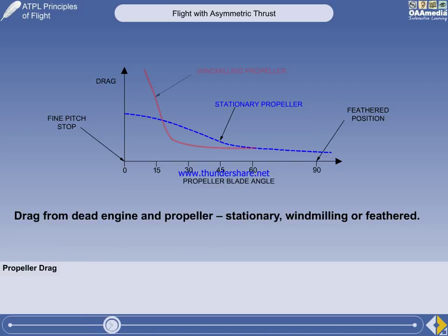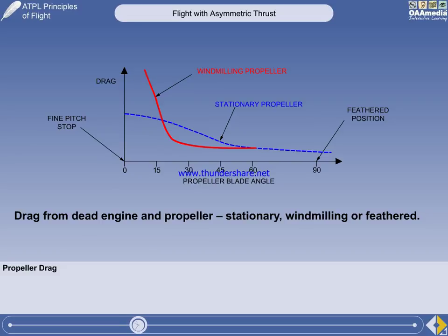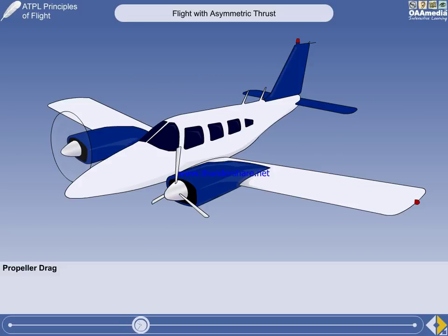A windmilling propeller will produce a large amount of drag, being driven by the relative airflow, generating both drag and torque. The propeller will also have the load of turning the dead engine, unless an automatic decoupling device is fitted. A feathered propeller will cause the least possible drag. There is no torque, since it is not rotating, and the parasite drag is at a minimum, with the blade's edge onto the airflow.